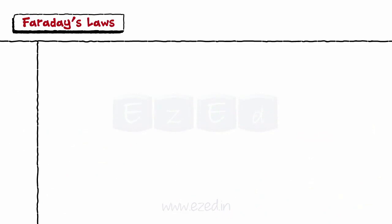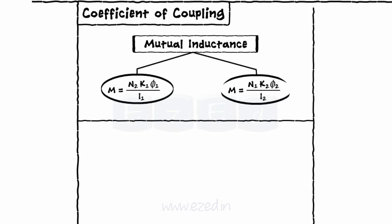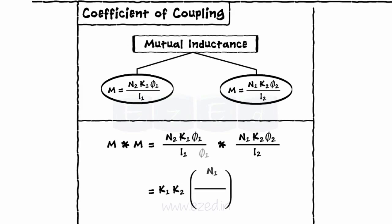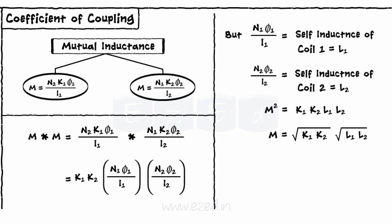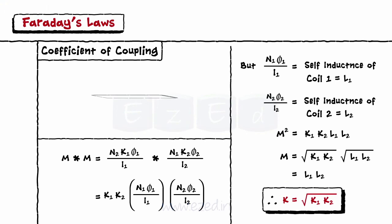The coefficient of coupling is defined as the ratio of actual mutual inductance present between the two coils to the maximum possible value of the mutual inductance. The mutual inductance can be represented in two different ways. Multiplying M into M, we get the equation as shown. Rearranging the terms, we write it as K1 into K2 into N1 phi 1 upon I1 into N2 phi 2 upon I2. Since N1 phi 2 upon I2 is the self inductance of coil 2, substituting these values, we get M equals square root of K1 into K2 into square root of L1 into L2. The factor root of K1 into K2 is called the coefficient of coupling, represented by K. Thus, K equals M upon root of L1 into L2.